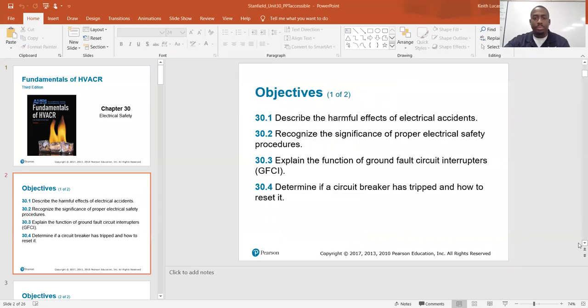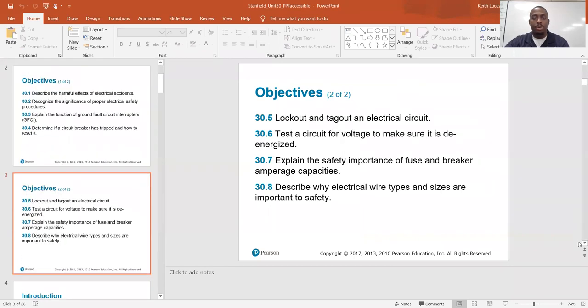Chapter 30, electrical safety. The objectives are: describe the harmful effects of electrical accidents, recognize the significance of proper electrical safety procedures, explain the function of ground fault circuit interrupters, determine if a circuit breaker has tripped and how to reset it, lock out and tag out an electrical circuit, test the circuit for voltage to make sure it is de-energized, explain the safety importance of fuse and breaker amperage capacities, describe why electrical wire types and sizes are important to safety.